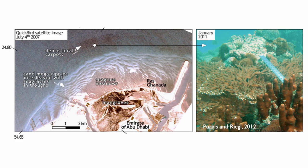Looking at Abu Dhabi, the mangroves grow there but have been limited by the formation of a harbor on their right, so it's a system that is now on the decline.